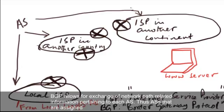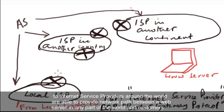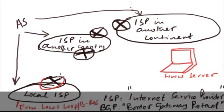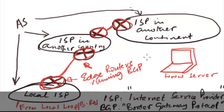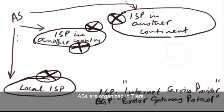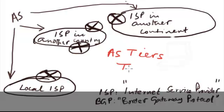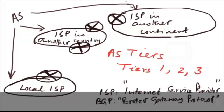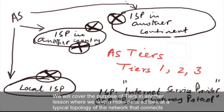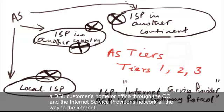Thus, ASs that are assigned to internet service providers around the world are able to provide network paths between a web server in any part of the world and customers across the DSL. ASs are organized as tiers. We will cover the purpose of tiers in another lesson where we take a more detailed look at a typical topology of the network that connects a DSL customer's home or office through the central office, or CO, and the internet service provider's network all the way to the internet.